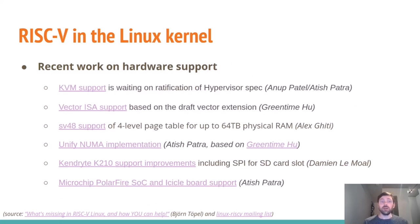Recent hardware support work includes KVM, which is basically complete and just waiting on ratification of the hypervisor specification. Support is being worked on for the Vector ISA extension, which is a draft that will bring exciting heavy processing capabilities. There's also SV48 support — four-level page tables for up to 64 terabytes of physical RAM — and work to unify NUMA implementations for bigger systems, plus support for some of the more recent RISC-V dev boards.